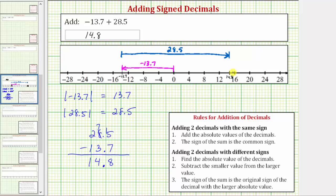Negative 13.7 plus 28.5 is positive 14.8. I hope you found this helpful.